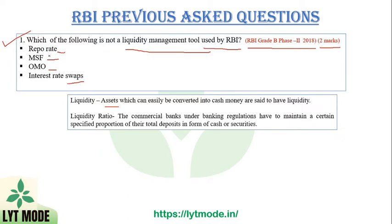Marginal Standing Facility (MSF) allows banks to borrow overnight up to 1% of their Net Demand and Time Liabilities from the RBI. Open Market Operations (OMO) is the process of buying and selling of government securities by the RBI in the open market, which helps control money supply and regulate liquidity in the economy.